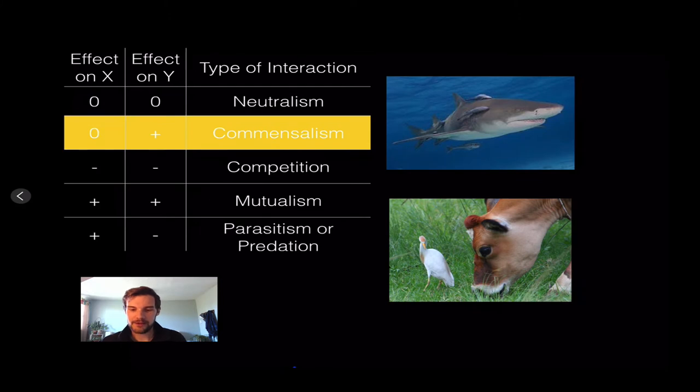Examples of one effect, so effect on Y, one benefits and the other is unaffected. So X is unaffected. So this shark is unaffected with these little tiny moray eels and they will latch onto sharks and they'll get a free ride and some protection from predators because no one's going to battle a shark. And the shark is mainly unaffected by this.